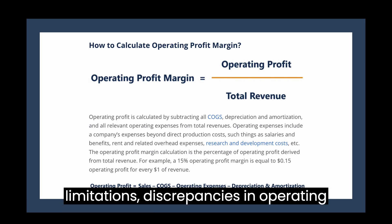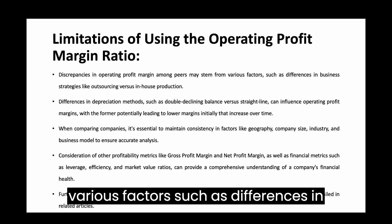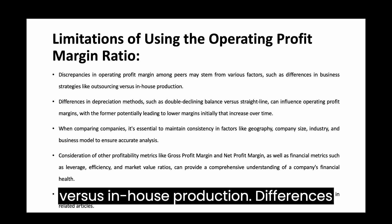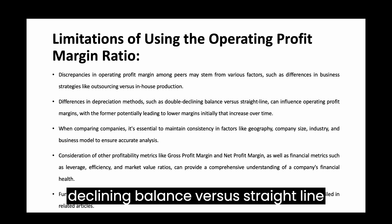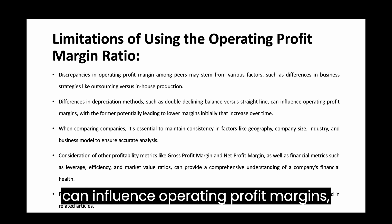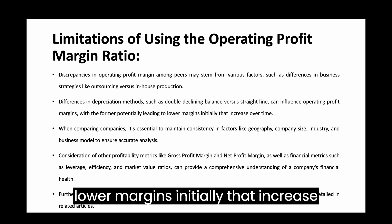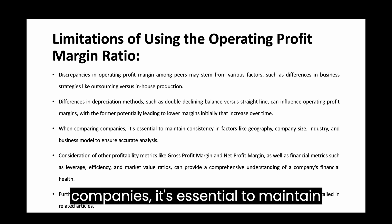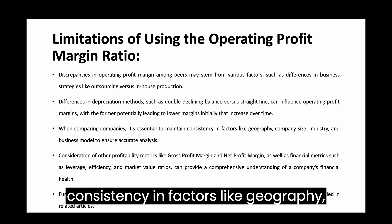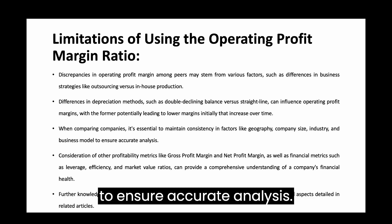Now, coming to limitations: discrepancies in operating profit margin among peers may stem from various factors, such as differences in business strategies like outsourcing versus in-house production. Differences in depreciation methods — such as double declining balance versus straight line — can influence operating profit margins, with the former potentially leading to lower margins initially that increase over time. When comparing companies, it is essential to maintain consistency in factors like geography, company size, industry, and business model to ensure accurate analysis.